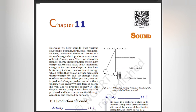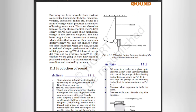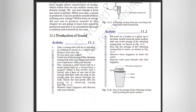We have talked about mechanical energy in the previous chapters. We have been taught about conservation of energy, which states that we can neither create nor destroy energy — we can just change it from one form to another. When you clap, a sound is produced. Can you produce sound without utilizing your energy? Which form of energy did you use to produce sound? In this chapter, we are going to learn how sound is produced, how it is transmitted through a medium, and received by our ears.